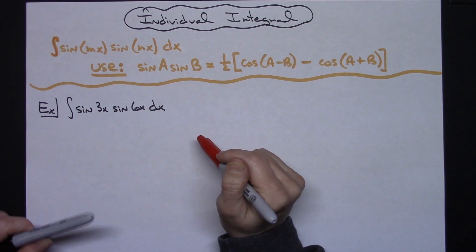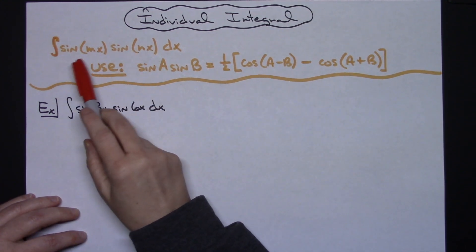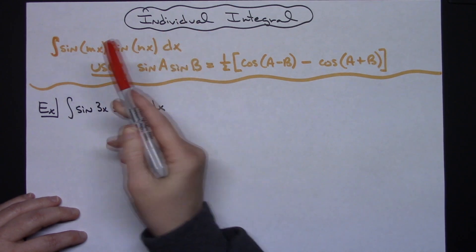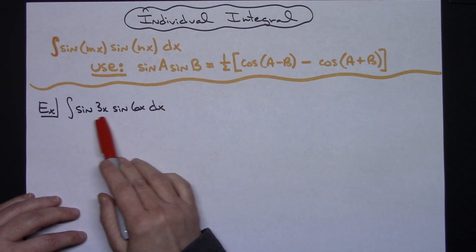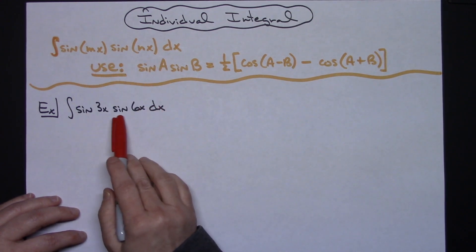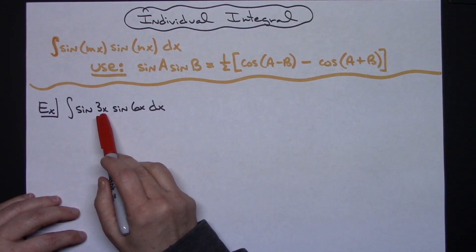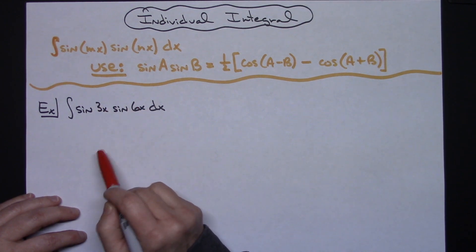In this video, we're going to work out an individual integral. We're going to take a look at the integral of sine, generically, sine mx, sine nx, dx. So in other words, a problem like this would fit this type of scenario. I've got the sine multiplied together, and I'm taking the sine of two different things there.